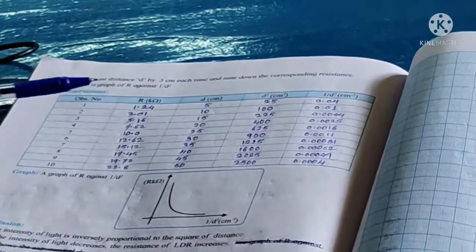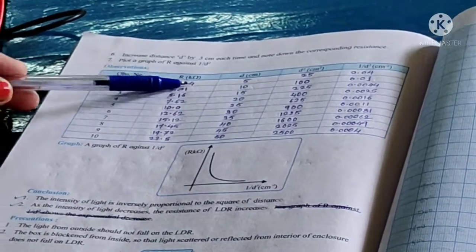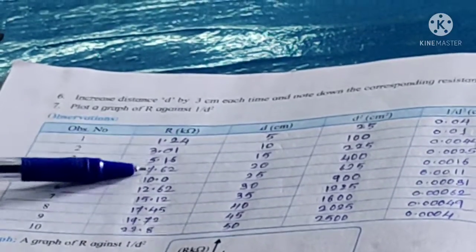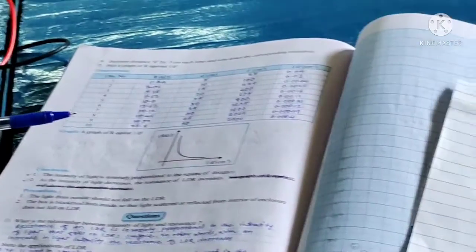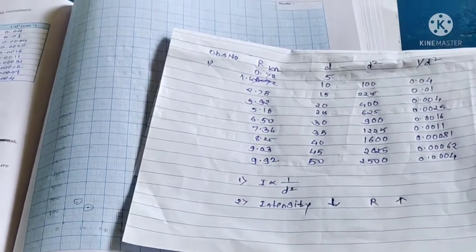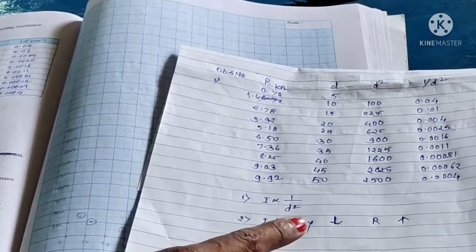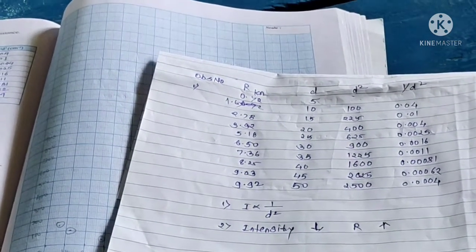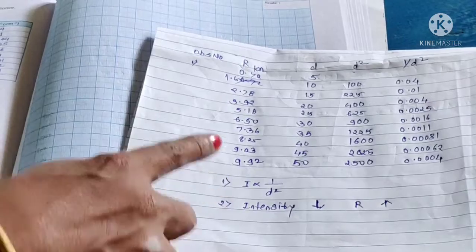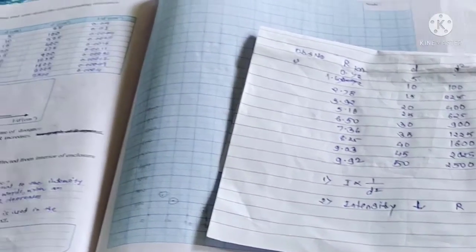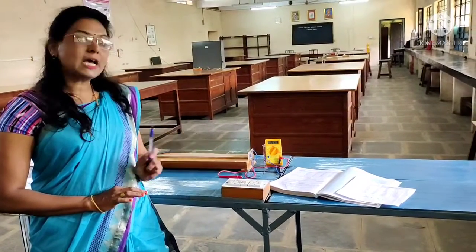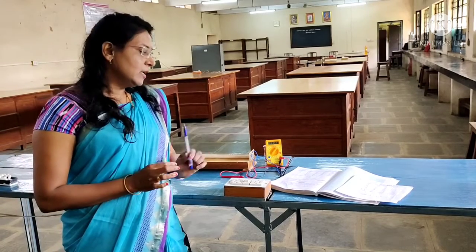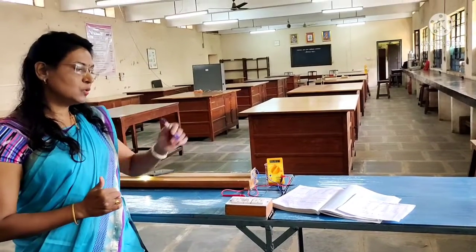Resistances go on increasing. In the observation table we have a conclusion that intensity is inversely proportional to 1 upon D square, and the other thing is that as intensity of light decreases, the resistance goes on increasing. First is I inversely proportional to 1 upon D square, and as intensity decreases, resistance goes on increasing.